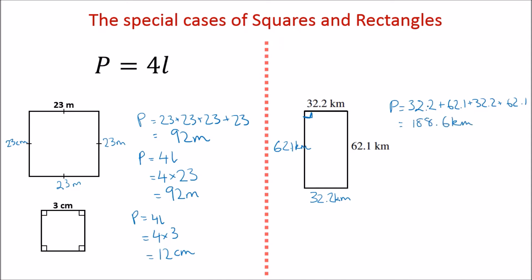Notice we're adding the 32.2 twice and we're adding the 62.1 twice. So there's two different ways this formula can be written. We can write it as perimeter equals two lots of length plus two lots of width, or we can write it as perimeter equals two lots of length plus width added together. This is like saying 32.2 plus 62.1, totaling that because it's in brackets, and then doubling it.